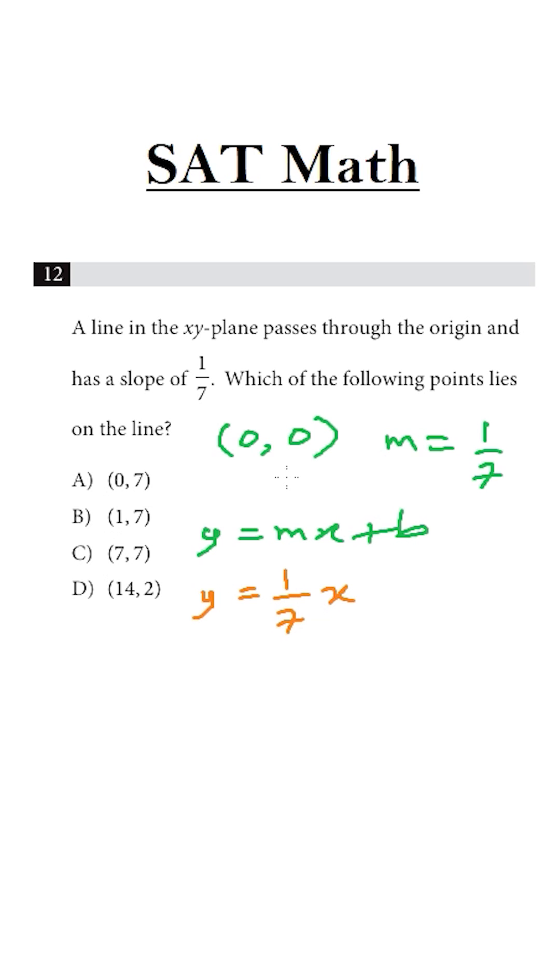And because its y-intercept is 0, it passes through the origin, the value of b is 0. We know the slope is 1 over 7, so this is our equation: y equals 1/7 x.